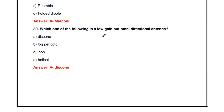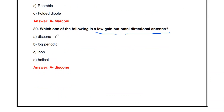Which one is a low gain but omnidirectional antenna? Options are log periodic, loop, helical, and discone. The discone antenna is a low gain and omnidirectional antenna.